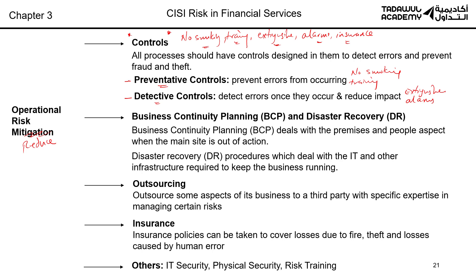The difference between preventative and detective controls comes up in the exam. One other way to reduce the impact of the risk of fire is using an insurance policy. Insurance or outsourcing basically means a third party — another company — will be responsible, or they have expertise in a certain aspect of operations, so you let them handle it.